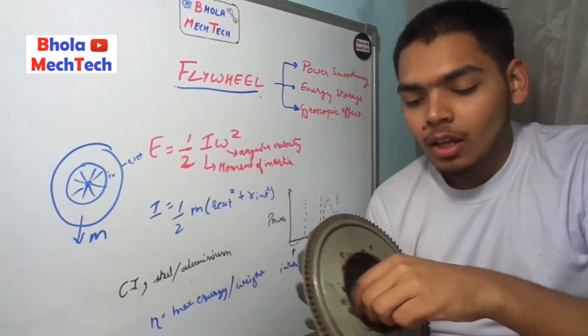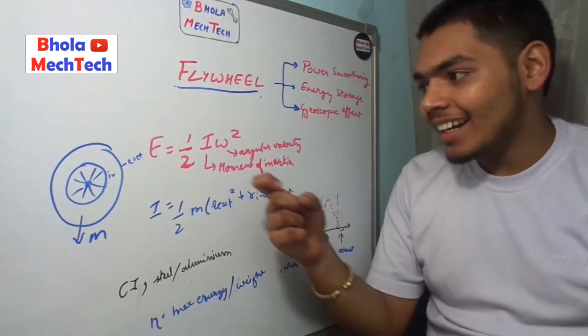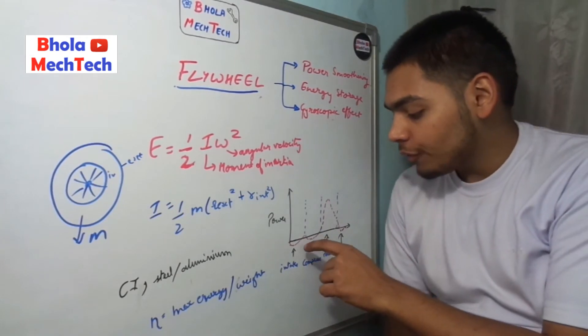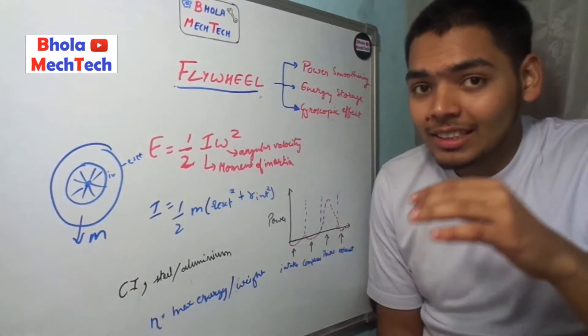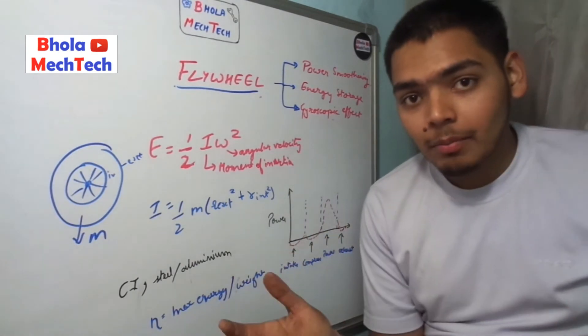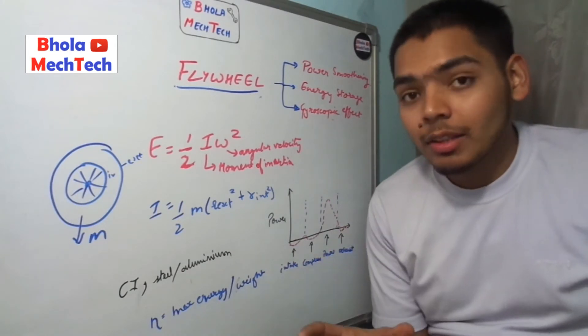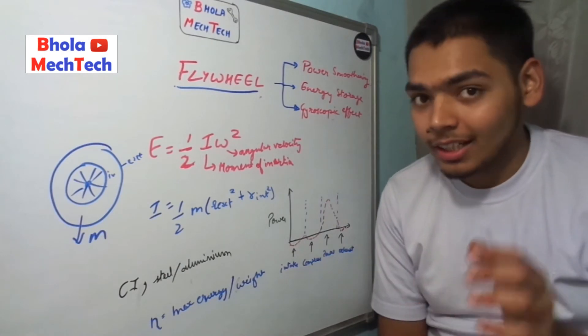When we put this value inside this formula, we get the energy that is stored by a wheel. But what is required is that the energy stored by this wheel must be greater than the energy required for conducting the intake, compression, and exhaust strokes. If the energy is less than that, the engine is not going to work because it might not be able to conduct all other three strokes. So it must store more energy than the energy required for these three strokes other than the power stroke.